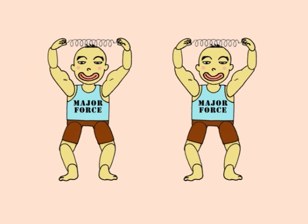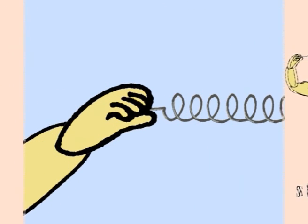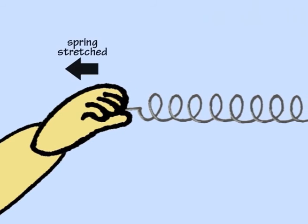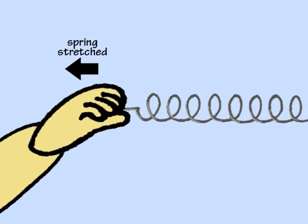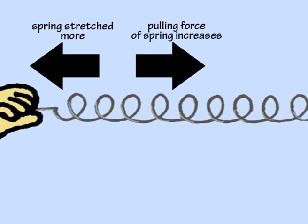Springs also exert forces on objects when they are compressed or stretched. When a spring is stretched in one direction, it exerts a force or pull in the opposite direction, as the spring tries to return to its original position. The further the spring is stretched, the greater the pulling force that is exerted in the opposite direction.